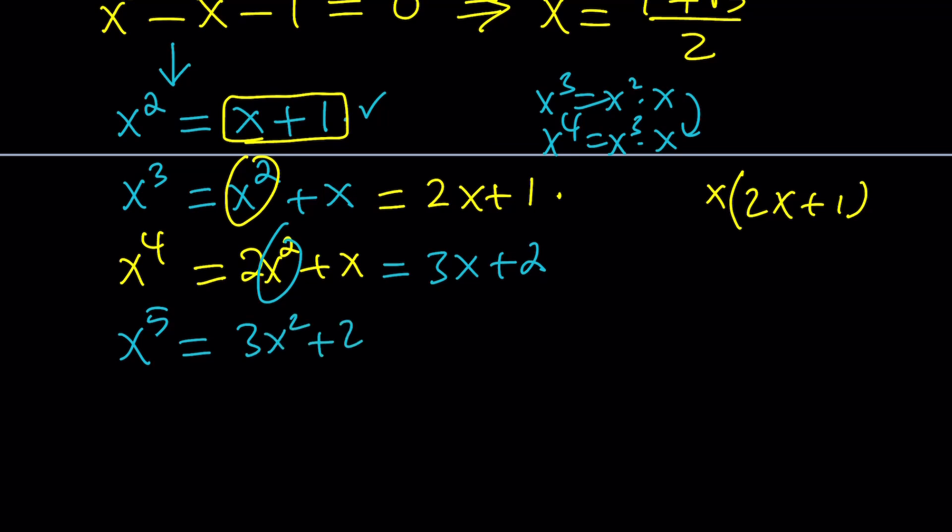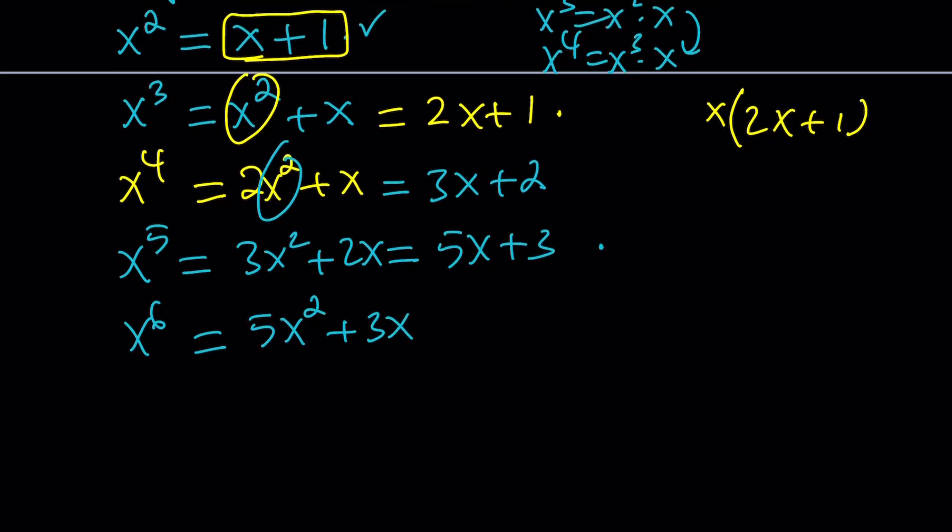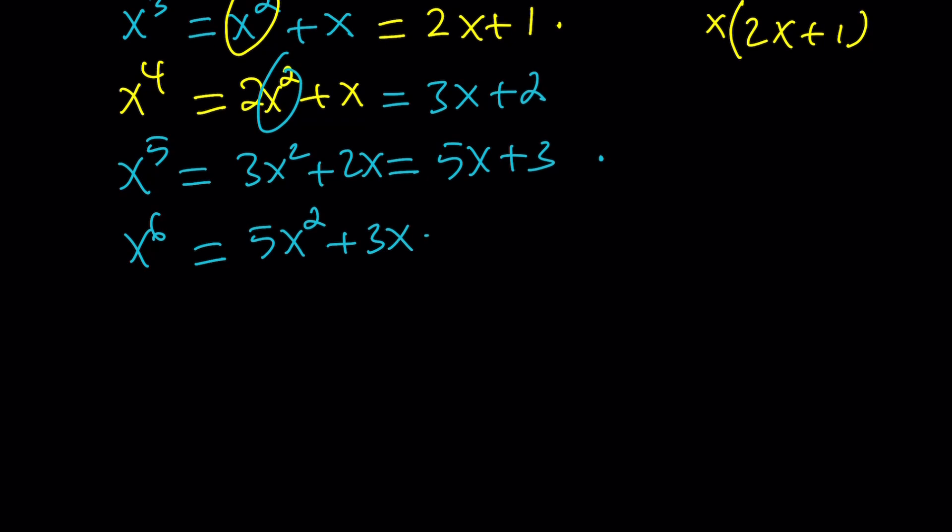If I do it with x to the sixth power, I get 5x squared plus 3x. Notice that every time we take the previous term, multiply by x, and then simplify by using the formula for x squared, which, this time, gives us 8x plus 5. Have you noticed a pattern? And, I'm going to write the x to the seventh and stop. 8x squared plus 5x. And, then, again, replacing 8 with x plus 1. I mean, x squared with x plus 1. We're going to get 13x plus 8.